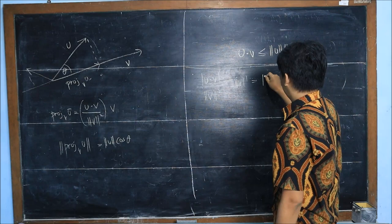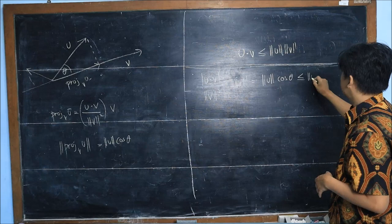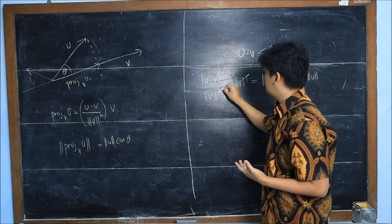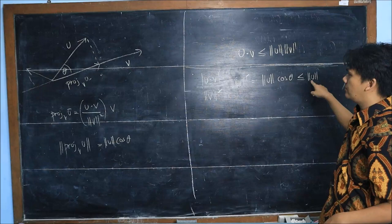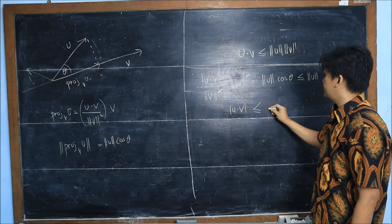On the right hand side we have u cosine theta, because the value of cosine is less than or equal to 1. This is less than or equal to u. But this can be simplified. We can cancel one length of v on the top and one length of v on the bottom. So if we multiply both sides with the length of v, then we have the absolute value of u dot v is less than or equal to the length of u times the length of v.